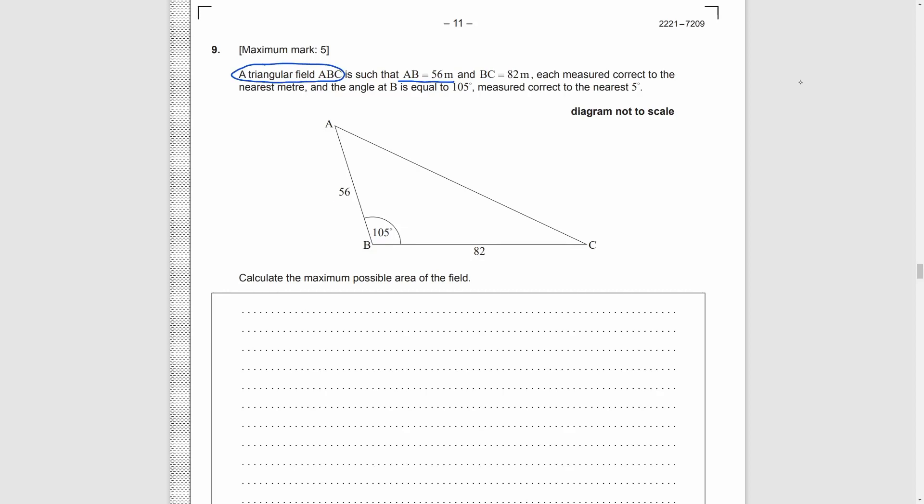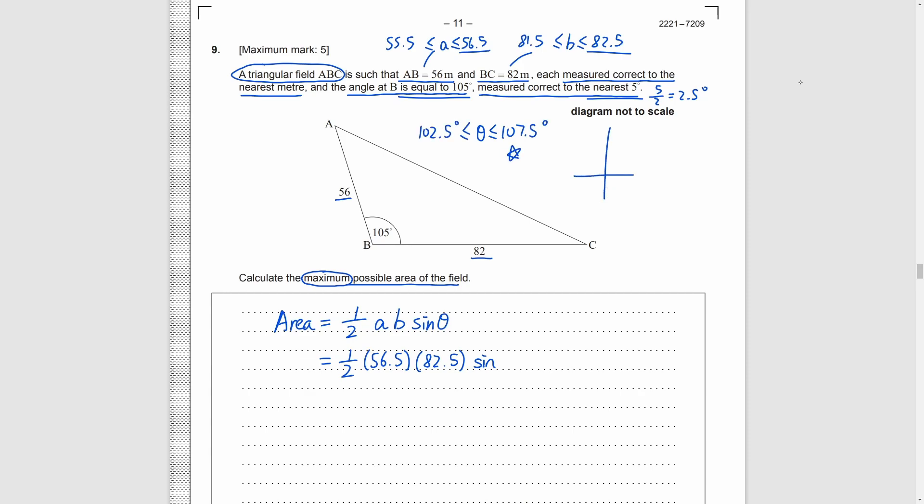Question 9. We have a triangle with sides 56 and 82. Each measure correct to the nearest meter. We also have an angle 105, which is corrected to the nearest 5 degrees. Everything is marked in the diagram below, and we need to find the maximum possible area of the triangle. By the formula of area of triangle, it is equal to half AB sine theta. And then, we need to consider the maximum possible sides of the triangle. As they are correct to the nearest meter, their upper bound are the values measured adding half of a meter, which are 56.5 and 82.5.